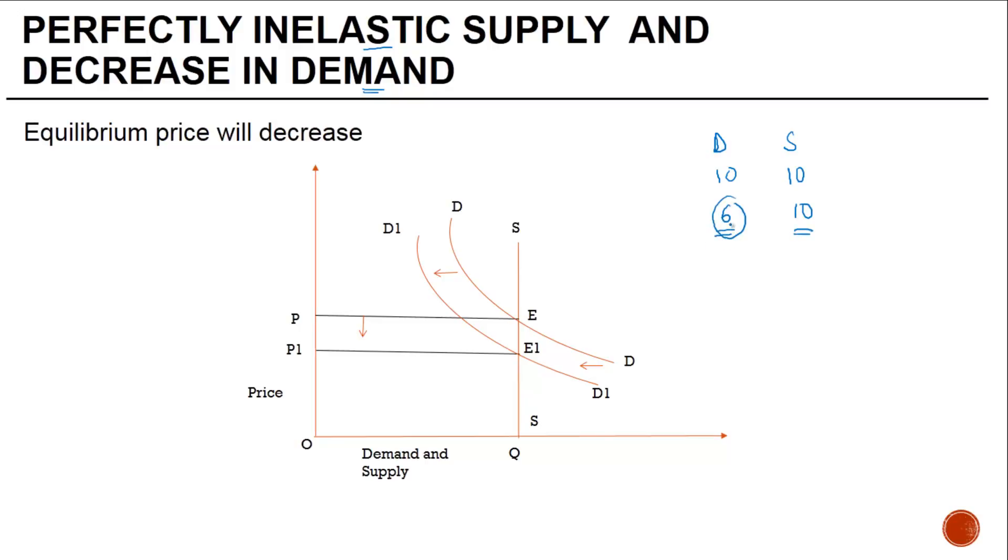If there are a lesser number of buyers, more sellers are going to chase them to sell their products, and they will be ready to offer them discounts, which means the price will decrease. Logically that is what has to happen.